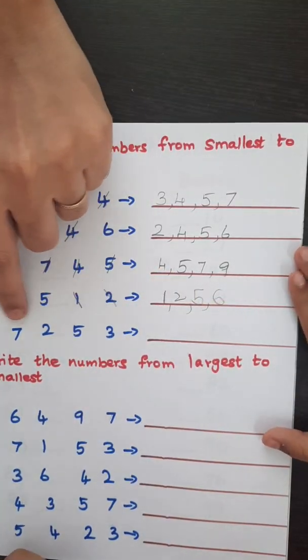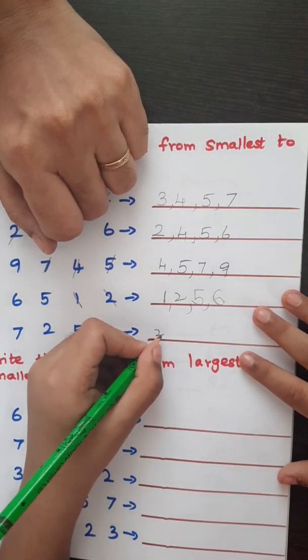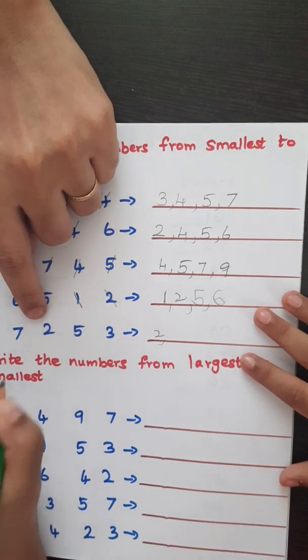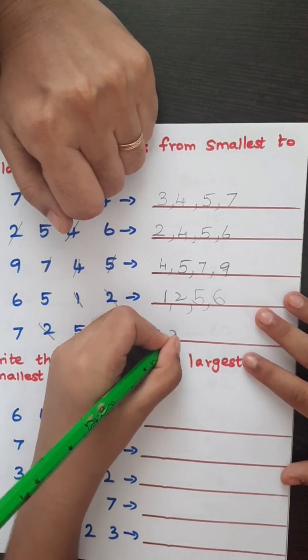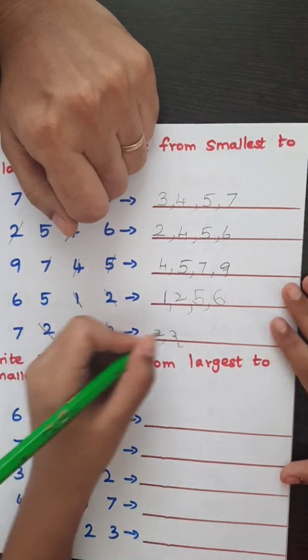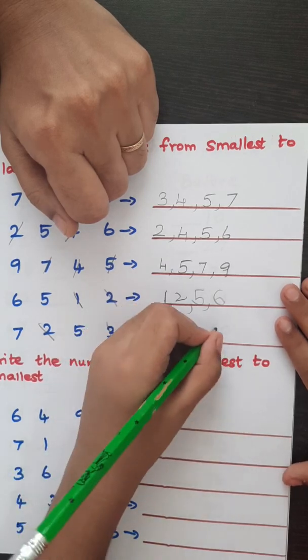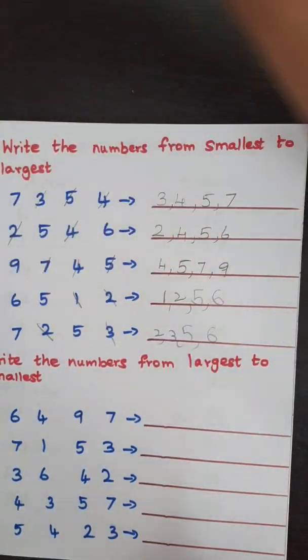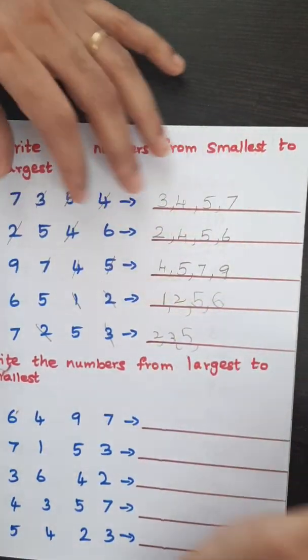So which is the smallest number here? Two. Okay, cut the two. Okay, next one, three. Okay. So five, yes. Six? No, six, here there's no six. Seven, yes.